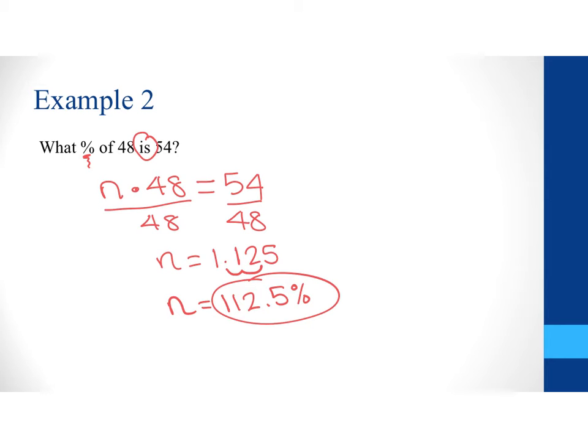Now, again, if you like the proportion method you can say what percentage so that means I'm looking for n over 100 equals and then we have 54 over 48. So, when I cross multiply I have 48n equals 54 times 100 is 5400. And when we divide we end up with 112.5%.